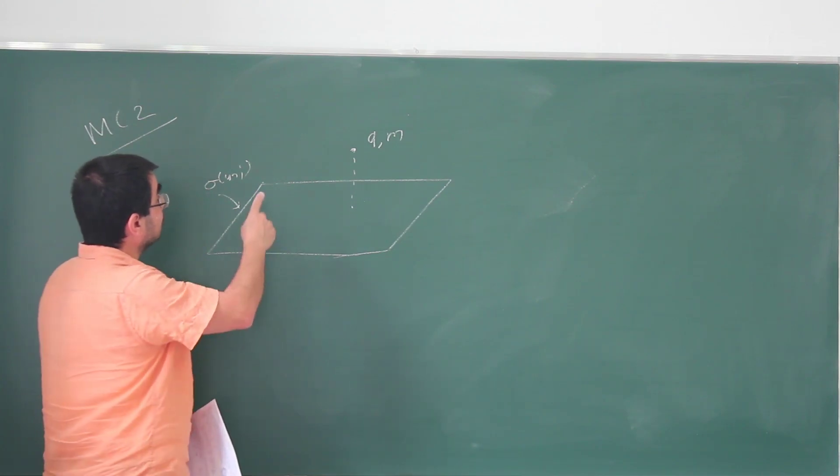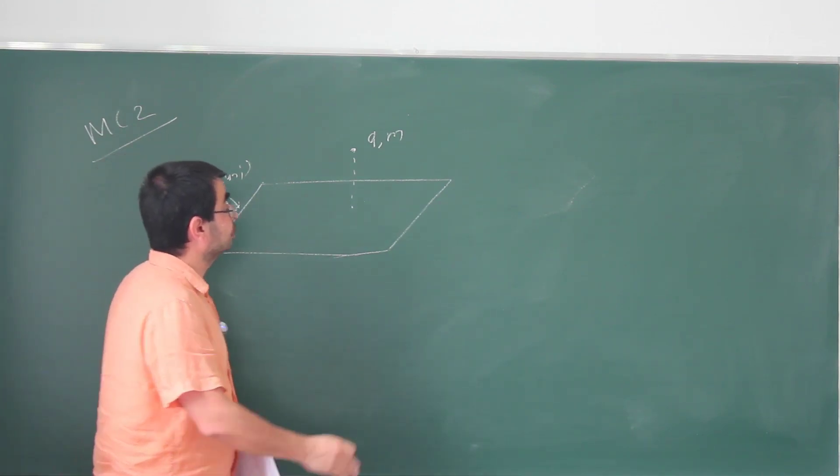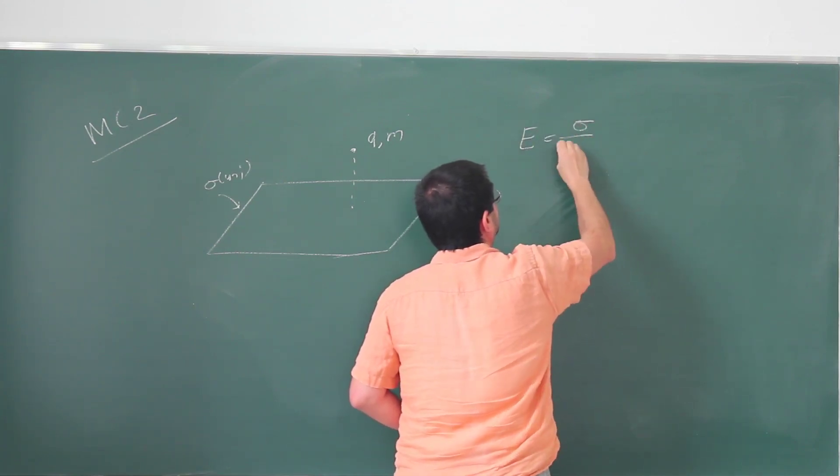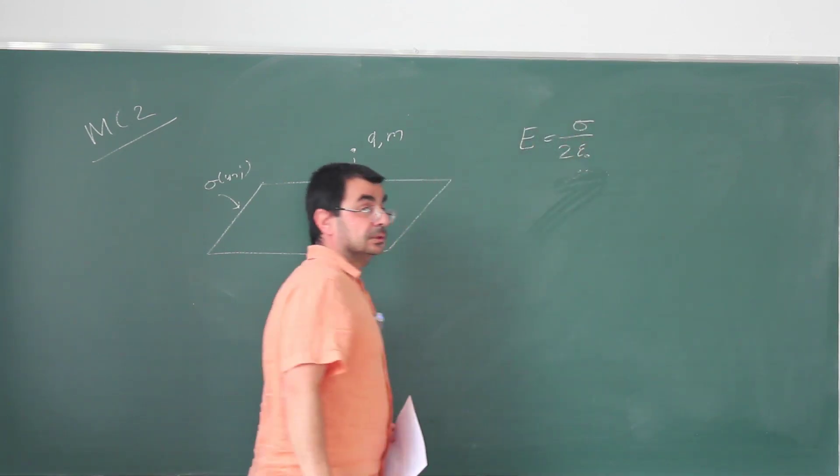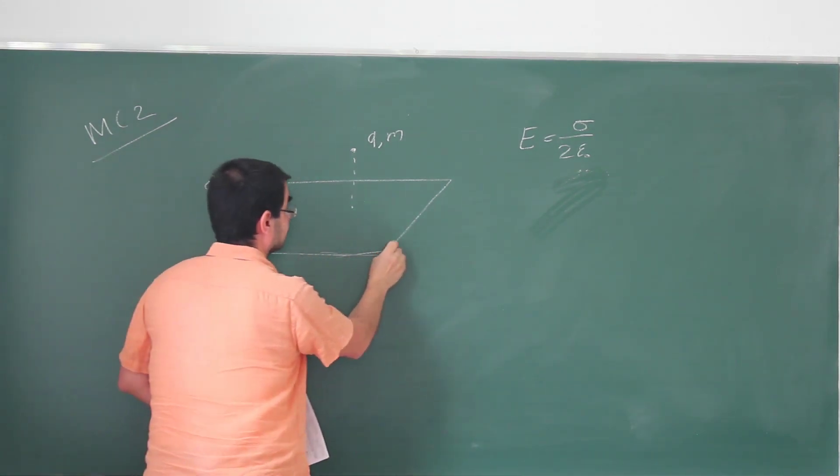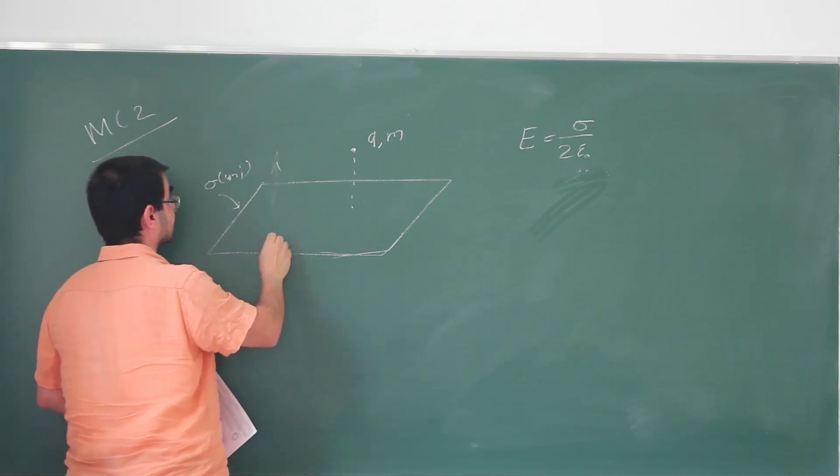The electric field due to this sigma charge distribution is going to be sigma over 2 epsilon naught, and it's not sigma over epsilon naught. That's because this is an insulating thin shell, so it's going to produce an electric field both in upward direction and also in downward direction.